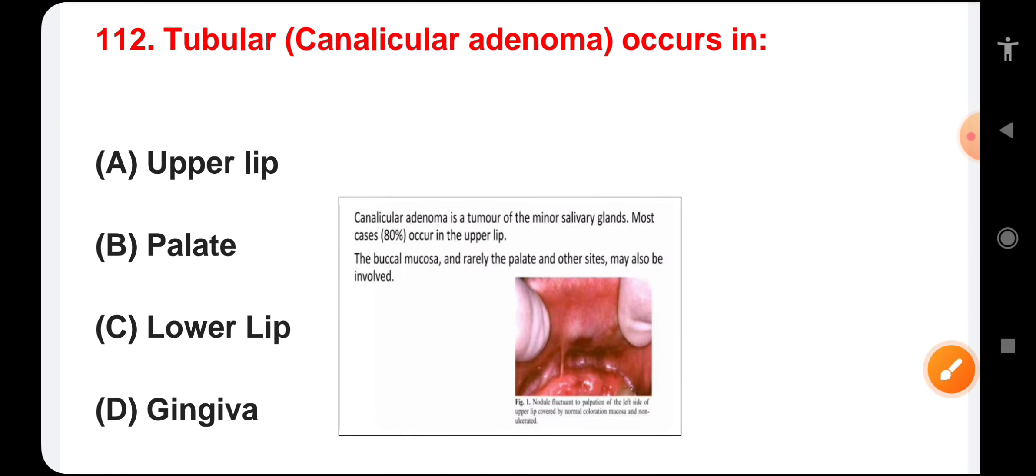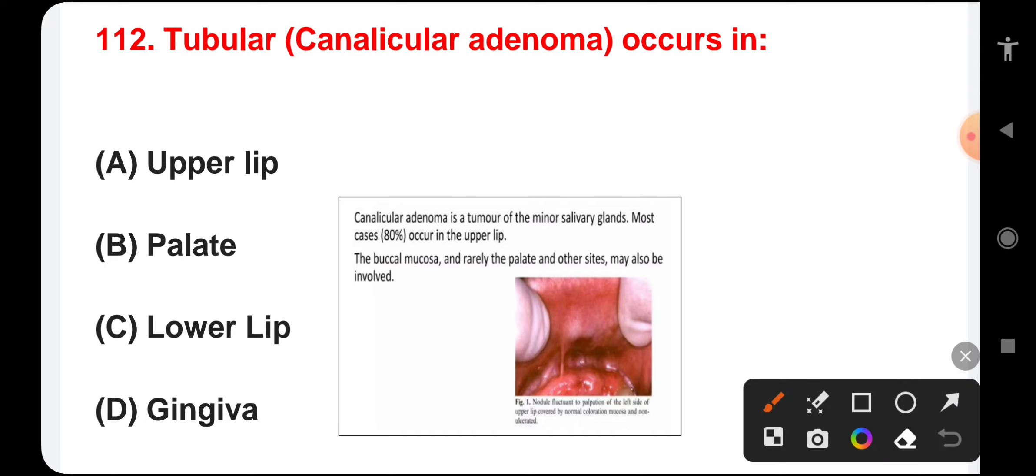Tubular or canalicular adenoma occurs in upper lip, palate, lower lip, or gingiva. Canalicular adenoma is a tumor of minor salivary glands. Most commonly, 80% of the time, it occurs in the upper lip. It can also occur in buccal mucosa and rarely the palate.